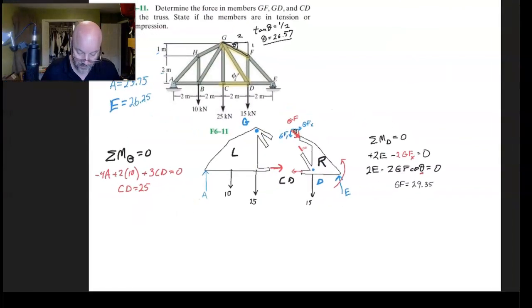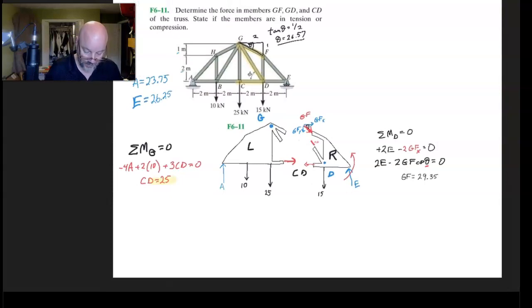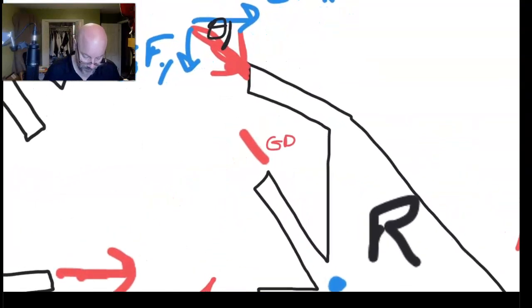Now let's kind of zoom out, see where we are. And we've got CD. We've got GF. Those are looking good. We just have one piece left and that's that diagonal piece GD in there. And so we got to guess the direction on it. Here's what I'm going to do. Let me zoom in just a little bit right here. I'm just going to guess that it's in here like this. It's under tension and that's really just a guess. And if I guess wrong, then I'll just know that I guessed wrong. The magnitude will still be correct.